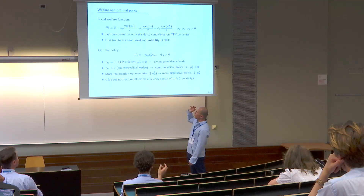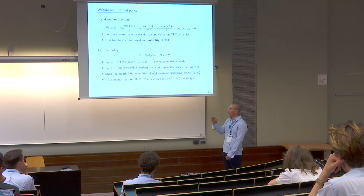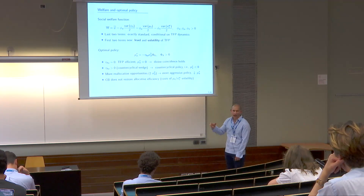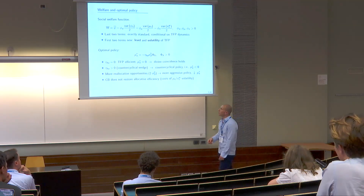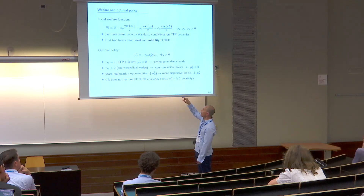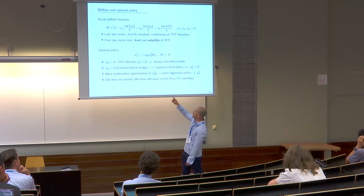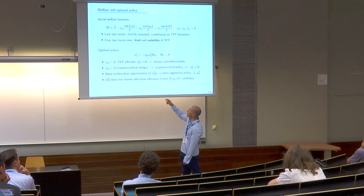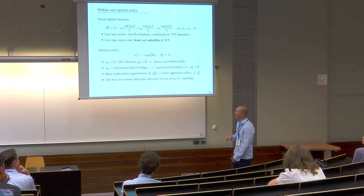In this environment we can solve for a sharp solution for optimal policy. Policy is parameterized by mu A, the cyclicality of the output gap. The optimal mu A depends on three terms: a complicated positive constant phi discussed in the paper, the cross-sectional variance in betas (how much heterogeneity there is), and the distortion and its sign, tau lambda A.